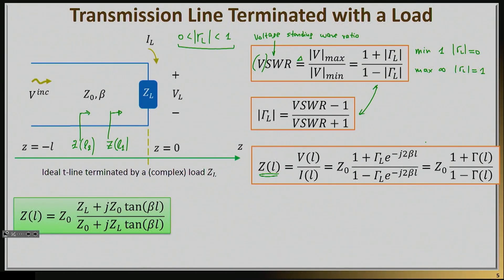The input impedance will always be defined by the voltage at any location over the current at any location, so V by I. If you look at the V by I, you will find out based on the expressions we had before that this is given by this number.